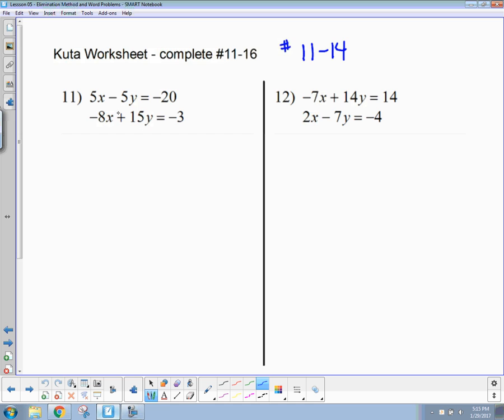5 can get to 15 if we multiply by 3. This will be a negative and that's a positive so we're looking good there. So top them by a 3. I'm going to bring it down beneath it. So 3 times 5 is 15x and then 3 times negative 15y because I saw that coming and then negative 60.